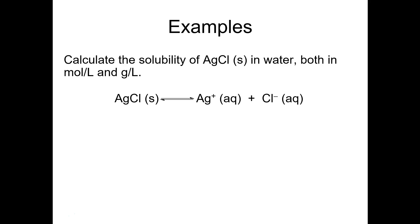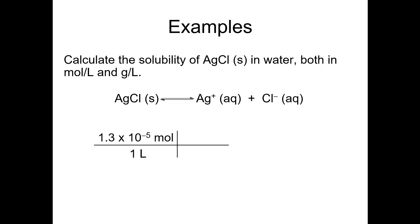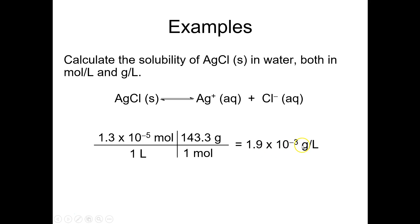We can also calculate solubility in grams per liter. We have 1.3 × 10⁻⁵ mol/L, and if we multiply by the molar mass of silver chloride — 143.3 g/mol — we get a solubility of 1.9 × 10⁻³ g/L. So about 2 milligrams of silver chloride will dissolve in a liter of water. That was a very simple problem in which molar solubility simply equals the square root of KSP.